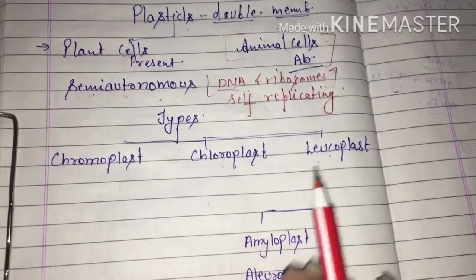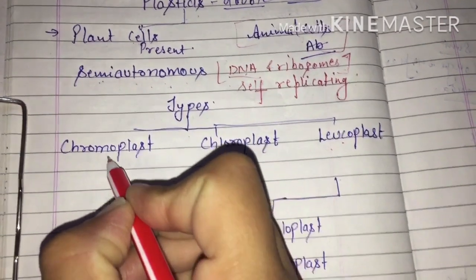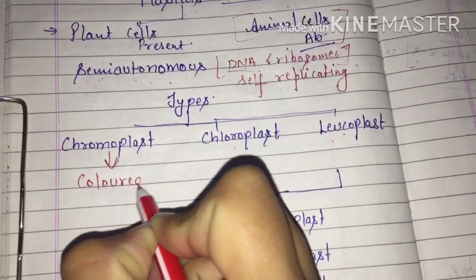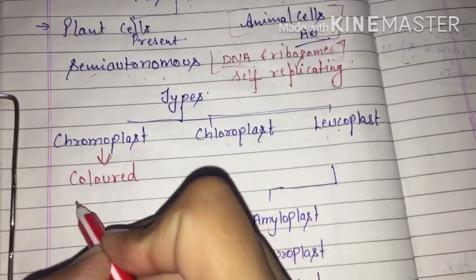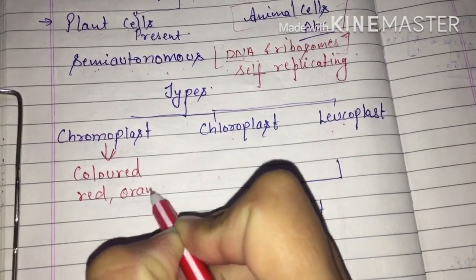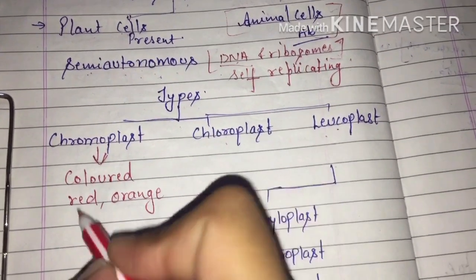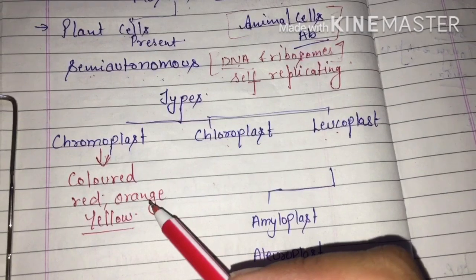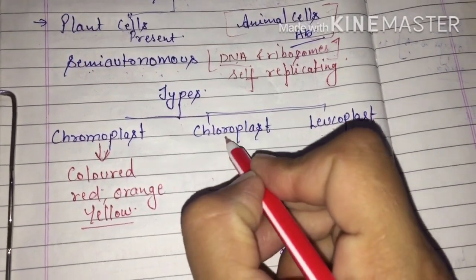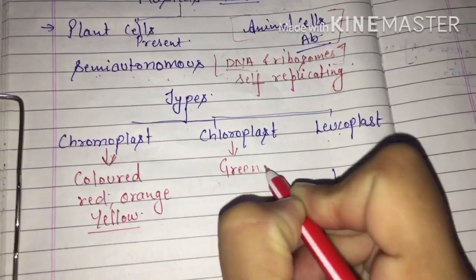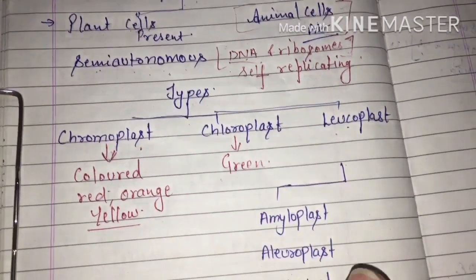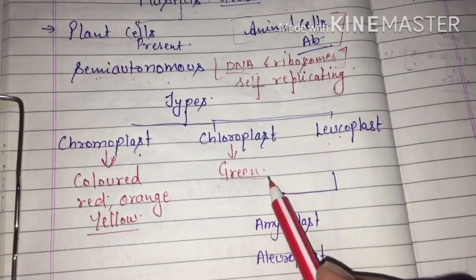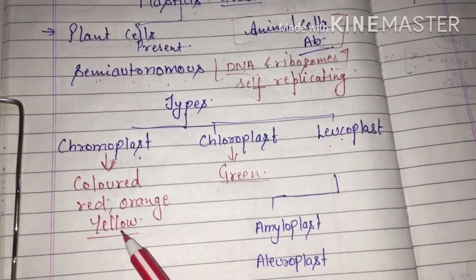These are the three different types of plastids. If we talk about chromoplast, these are colored plastids. The colors include red, orange, brown, and yellow — these different shades come under chromoplast. If we talk about chloroplast, these are mainly green plastids. Green color is not considered under chromoplast; chromoplast are the colored plastids except green color.